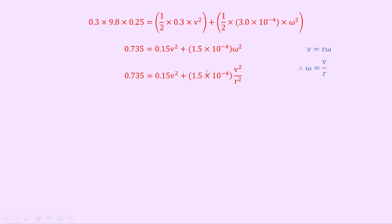Now we've got this in terms of v squared and this in terms of v squared, but we can plug in our value for r first of all. So we have 0.735 equals 0.15v squared plus 1.5 times 10 to the minus 4 over 0.05 squared times v squared. And simplifying this, the right hand side becomes 0.06v squared, and the rest stays the same.